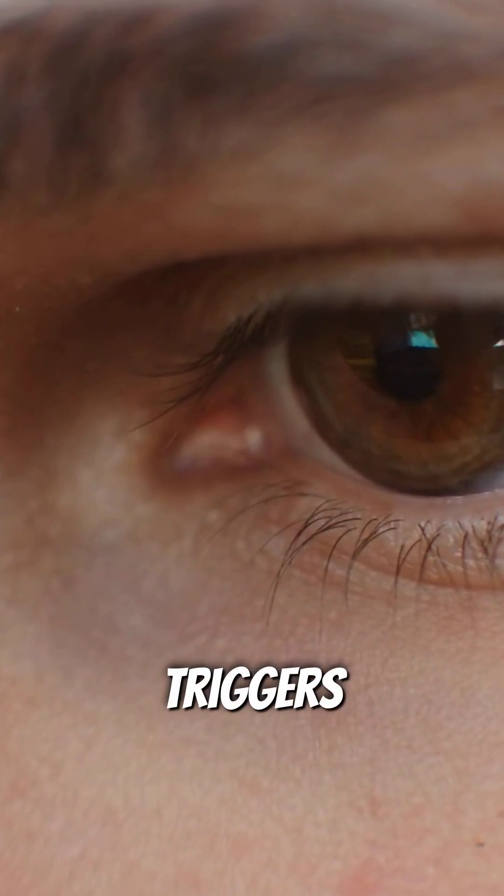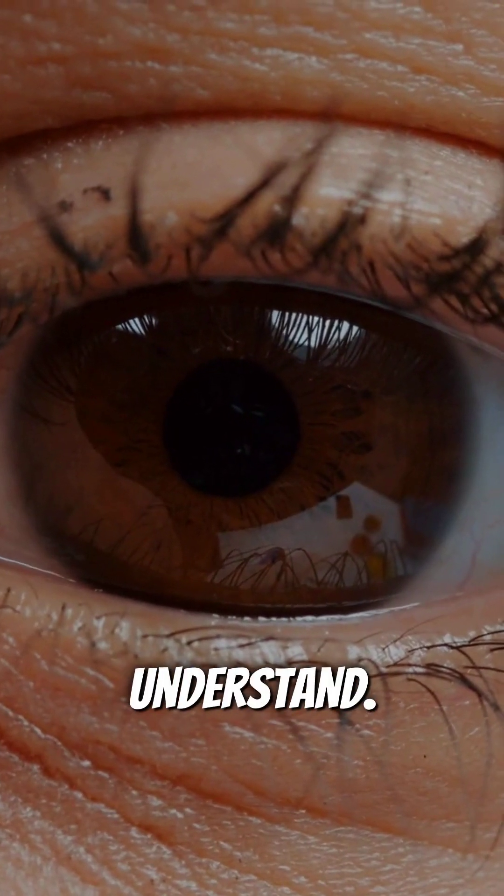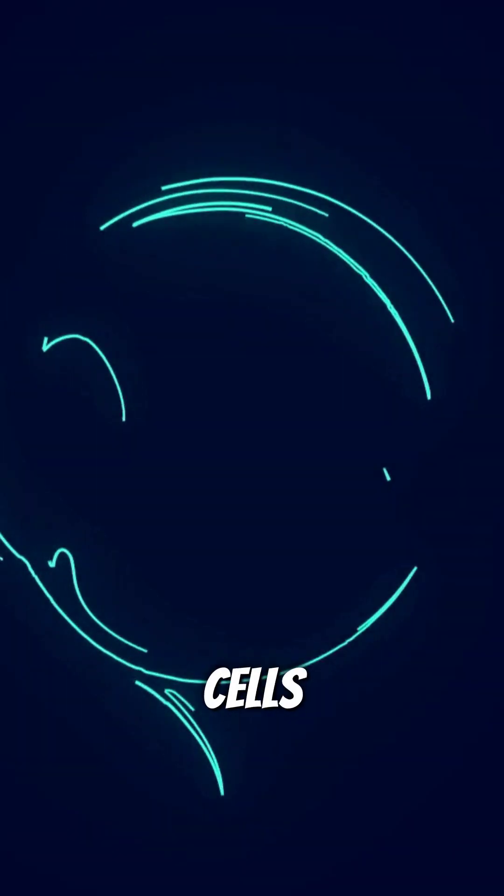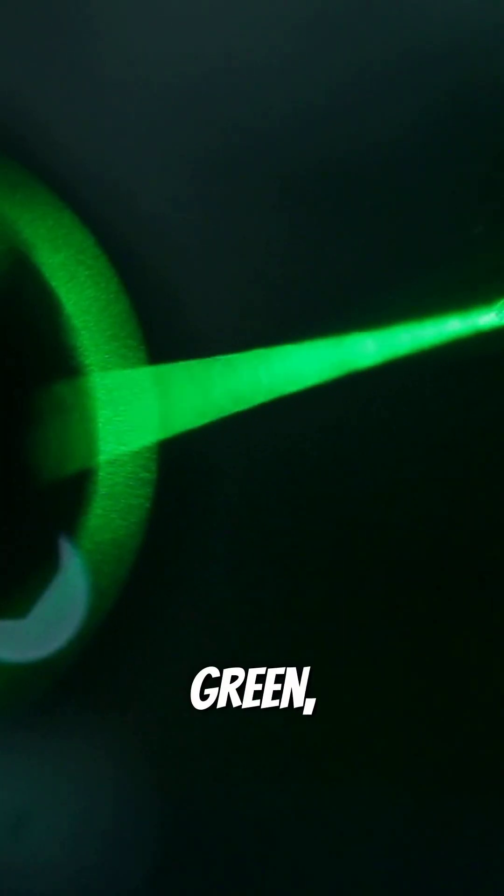When light enters your eye, it triggers a cascade of events that scientists are still trying to fully understand. Three types of cone cells in your retina respond to different wavelengths of light: red, green, and blue.